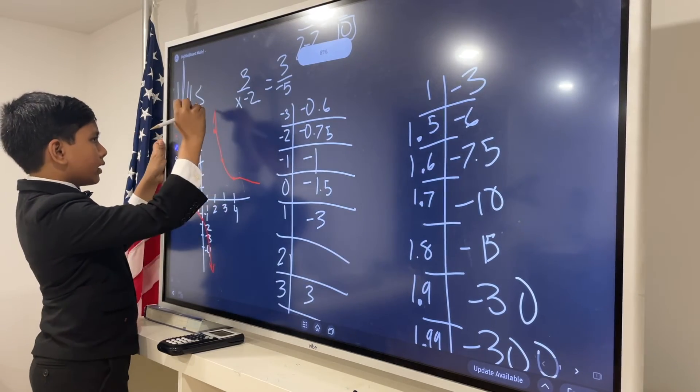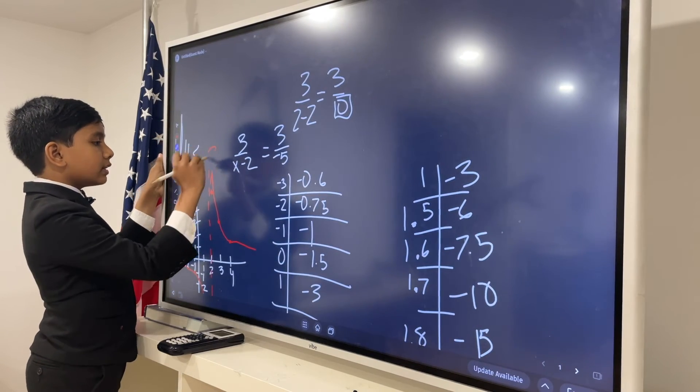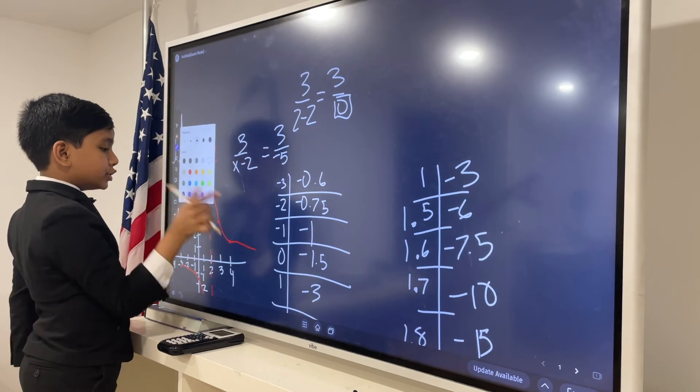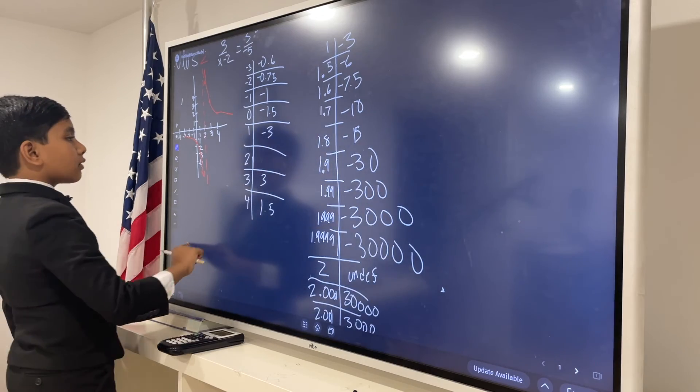Wait a sec. Wait a sec. Where do they both nearly touch but never touch? 2. That's right. The vertical asymptote is 2. That's right. What does that mean for us?